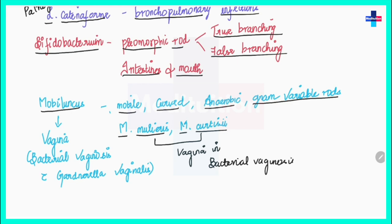Bacterial vaginosis is most commonly caused by Gardnerella vaginalis, but sometimes species like Mobiluncus mulieris and Mobiluncus curtisii are also isolated from clinical specimens of patients with bacterial vaginosis. This bacterial vaginosis is a polymicrobial infection that causes vaginal discharge with a rotten fish smell.